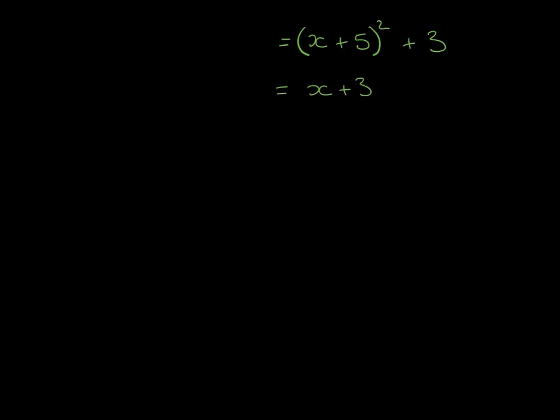Likewise half of 6 is 3 so it's x plus 3 in brackets. 3 squared is 9 we've got 14 so we add 5.